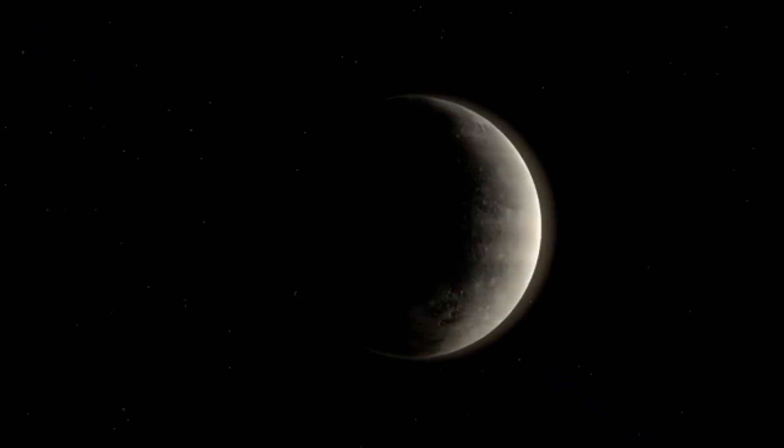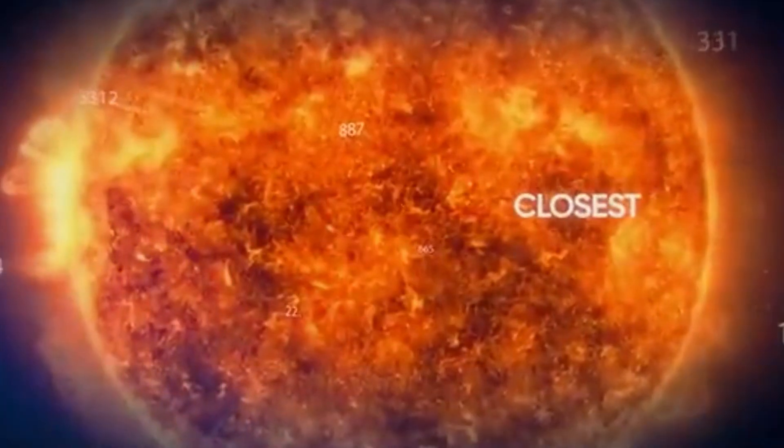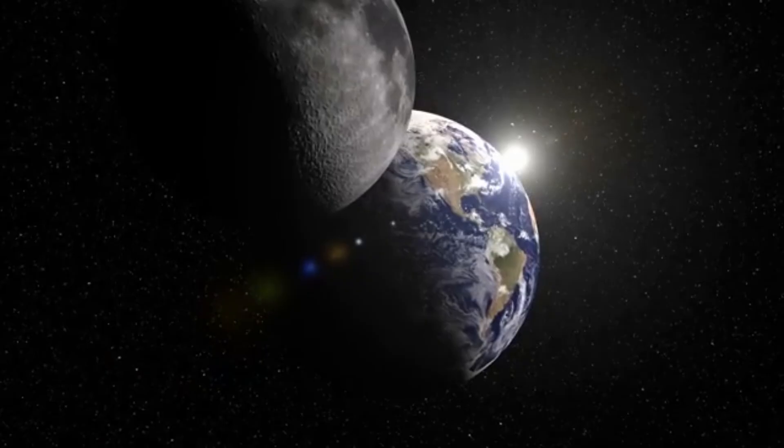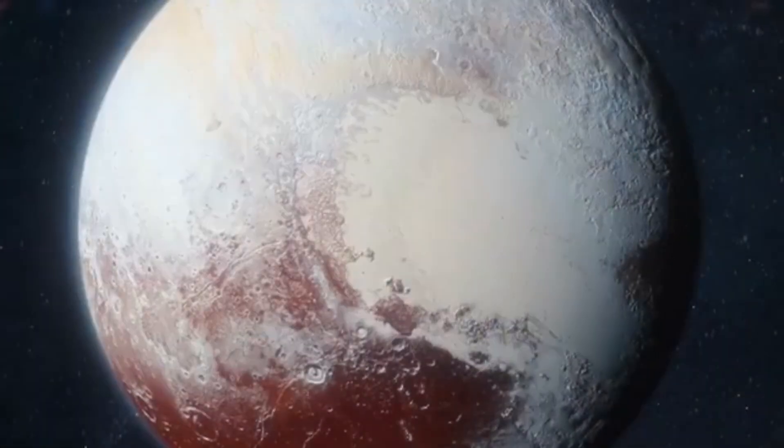This star system, the closest to ours, is approximately 4.367 light years from the sun. Pluto is one of the farthest bodies in the solar system. But does that mean Pluto is much closer to Alpha Centauri than any other body? What would the closest stars to our solar system look like if we were standing on Pluto's surface?